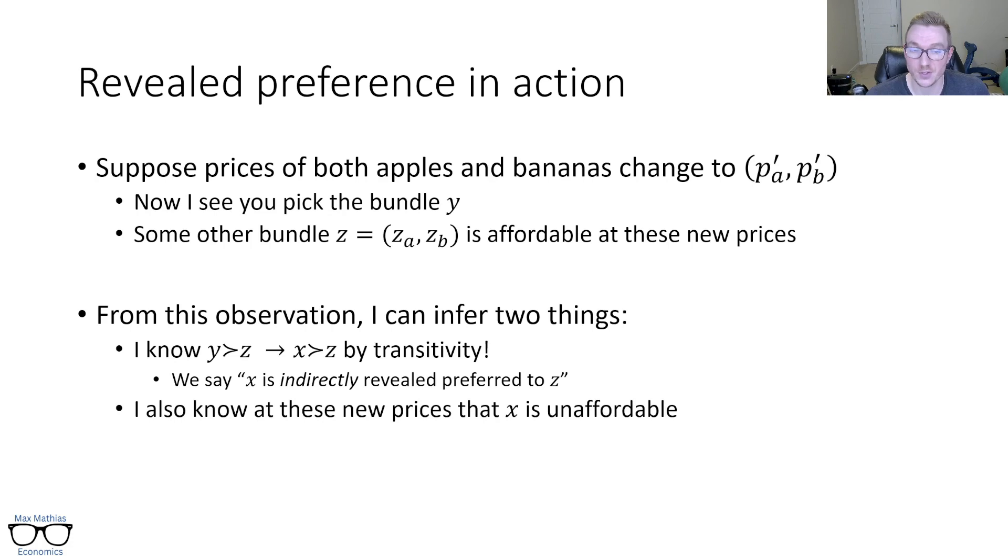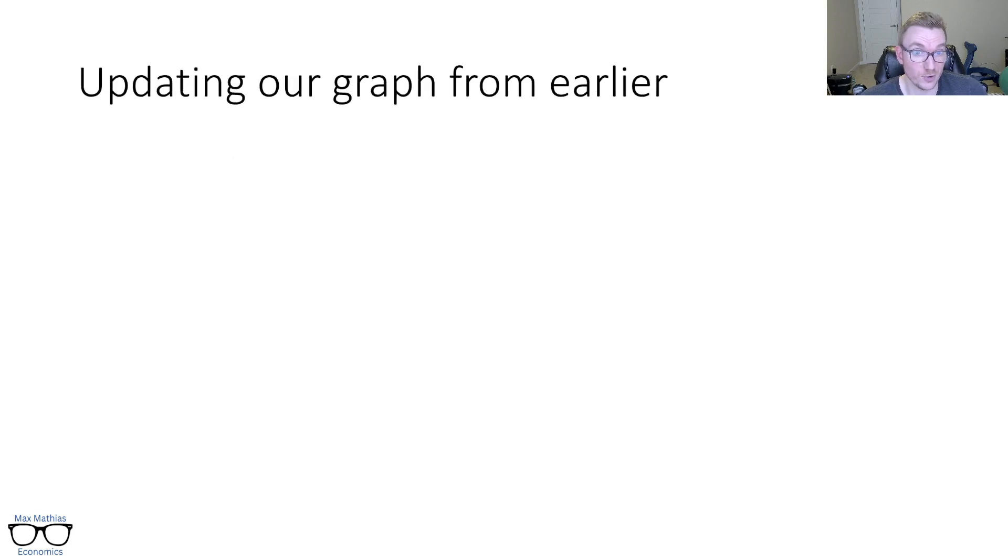I also then know that at these new prices, X is unaffordable. How do I know that? Well, if it was affordable, if you could have picked it, I know you would have over Y because you did earlier. So if I saw you pick X in scenario A, and now in scenario B, I see you pick Y, well, I know that X wasn't feasible for you. If X was, then you're being crazy and picking Y in this new scenario. You picked X over Y before, you wouldn't change that unless X isn't affordable anymore. So just from those two observations, we learn so much information about your feeling not only for X to Z, but then also understanding that X is no longer affordable.